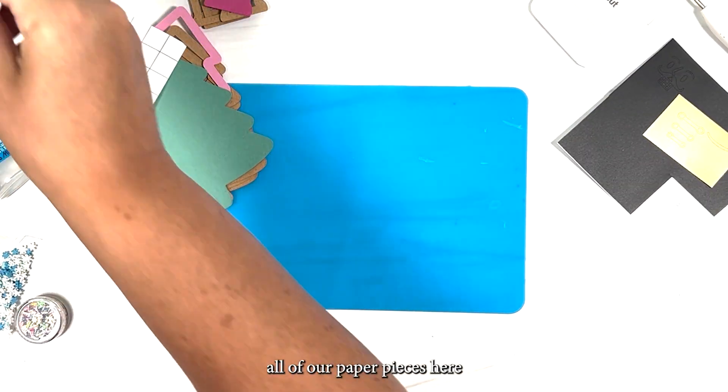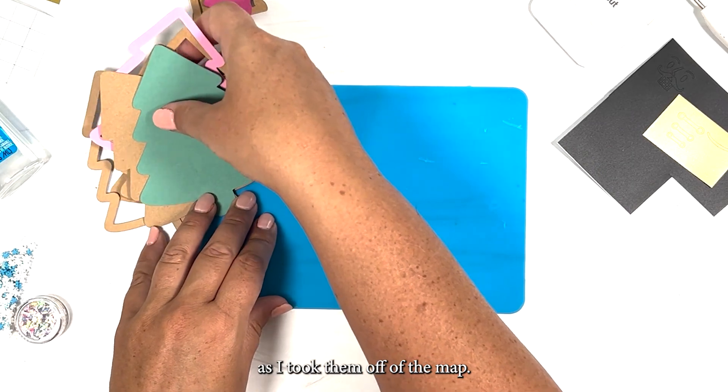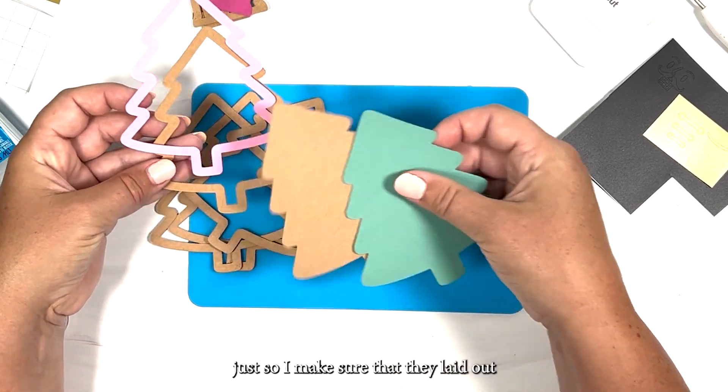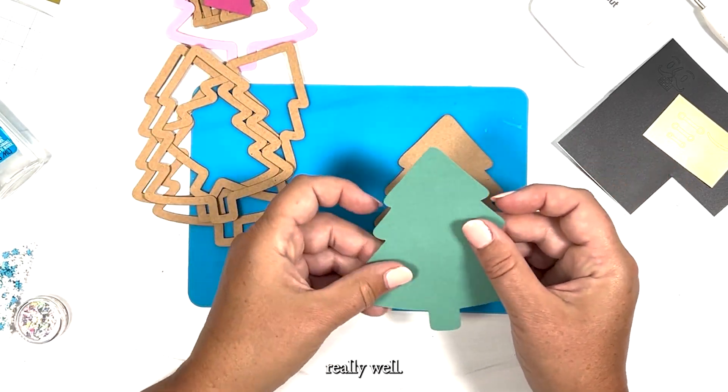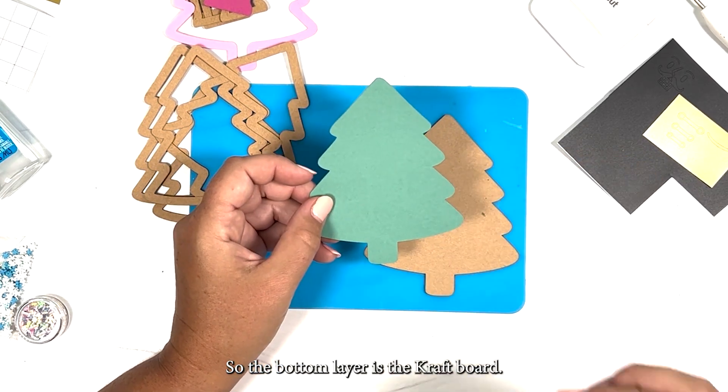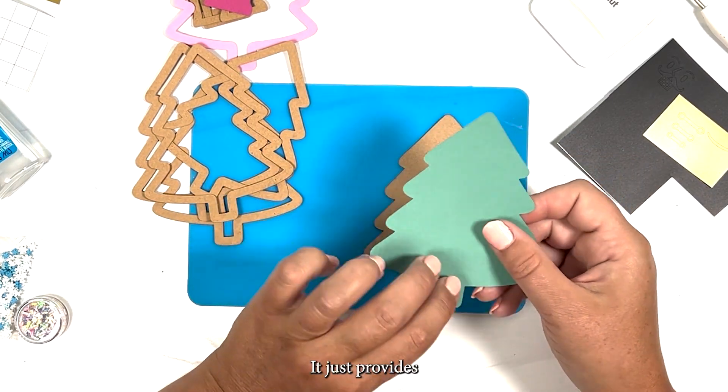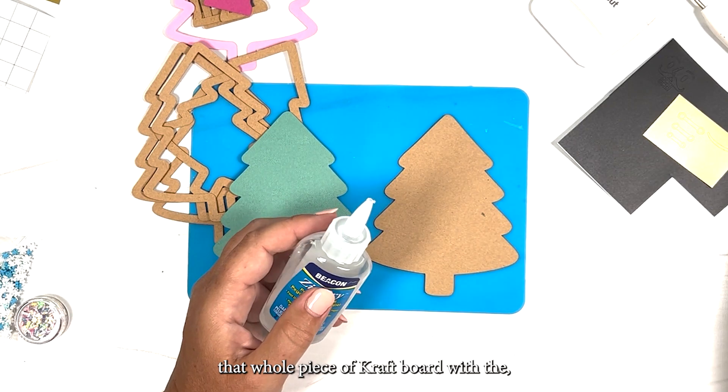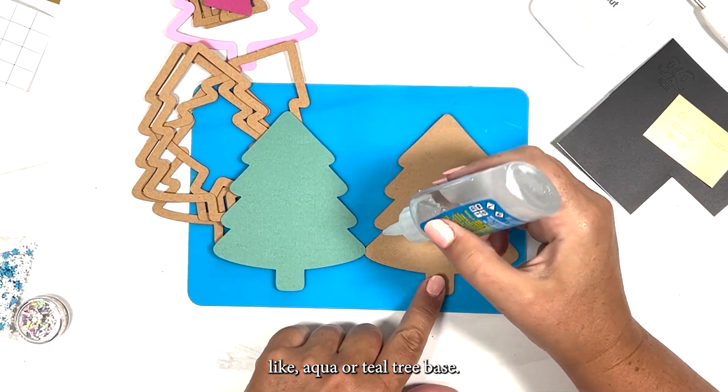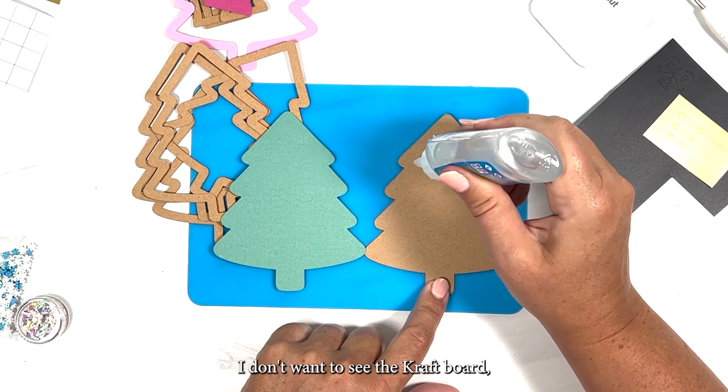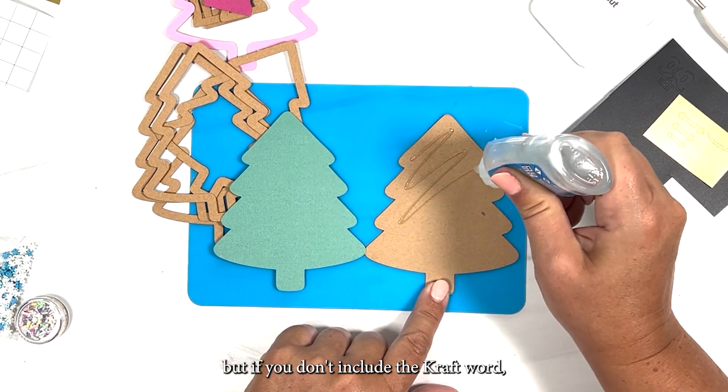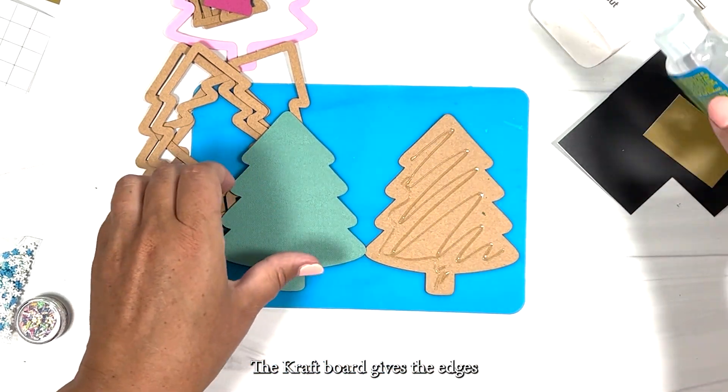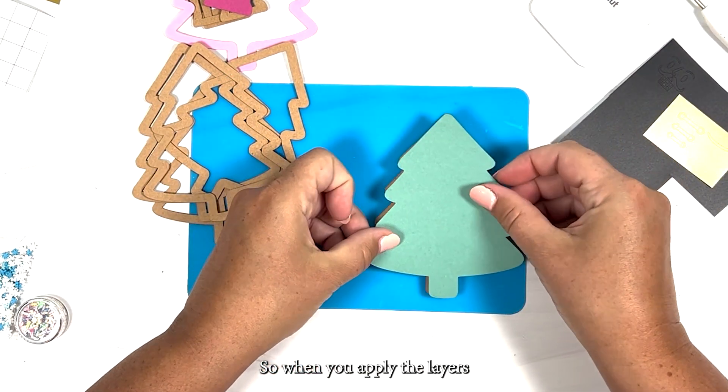So let's lay out all of our paper pieces here. As I took them off of the mat, I tried to kind of keep them the right side up or the way that I cut them just so I make sure that they laid out really well. So the bottom layer is the craft board. It just provides some stability to the ornament and I'm going to actually just cover that whole piece of craft board with the aqua or teal tree base. I don't want to see the craft board but if you don't include the craft board, I noticed that the ornament isn't quite as stable.